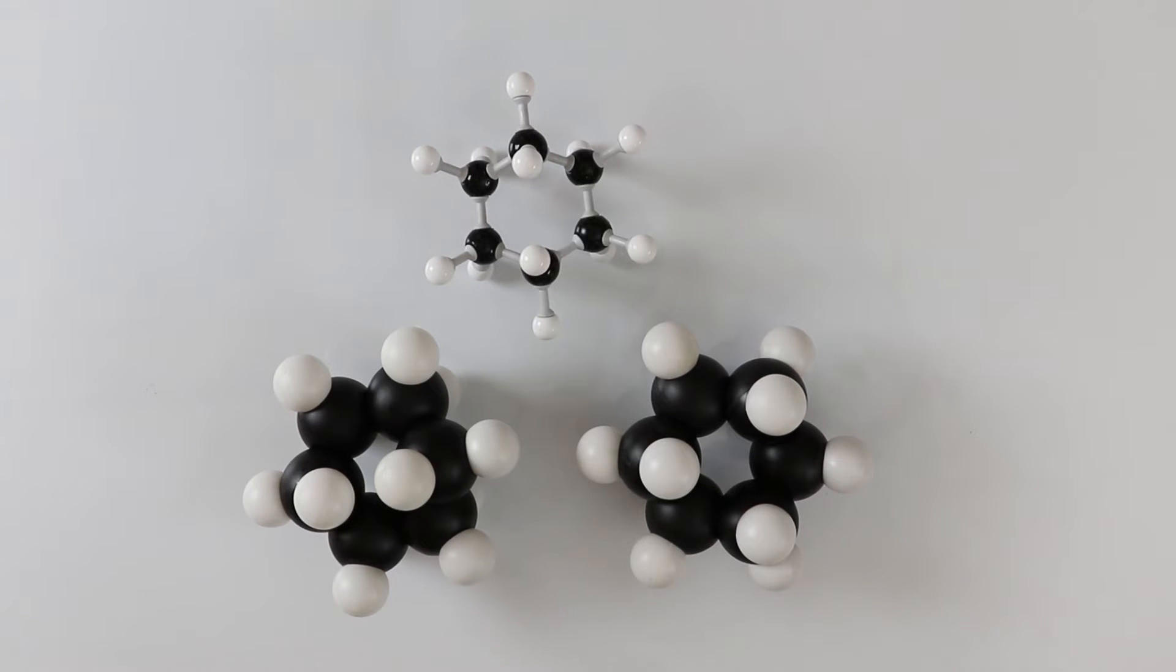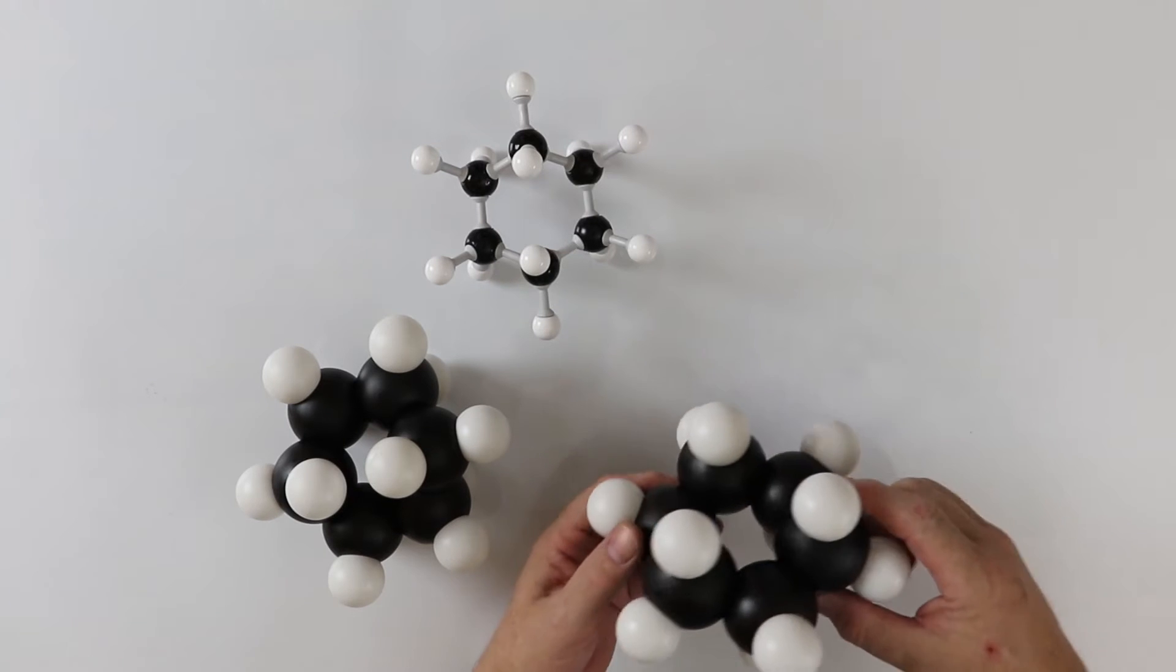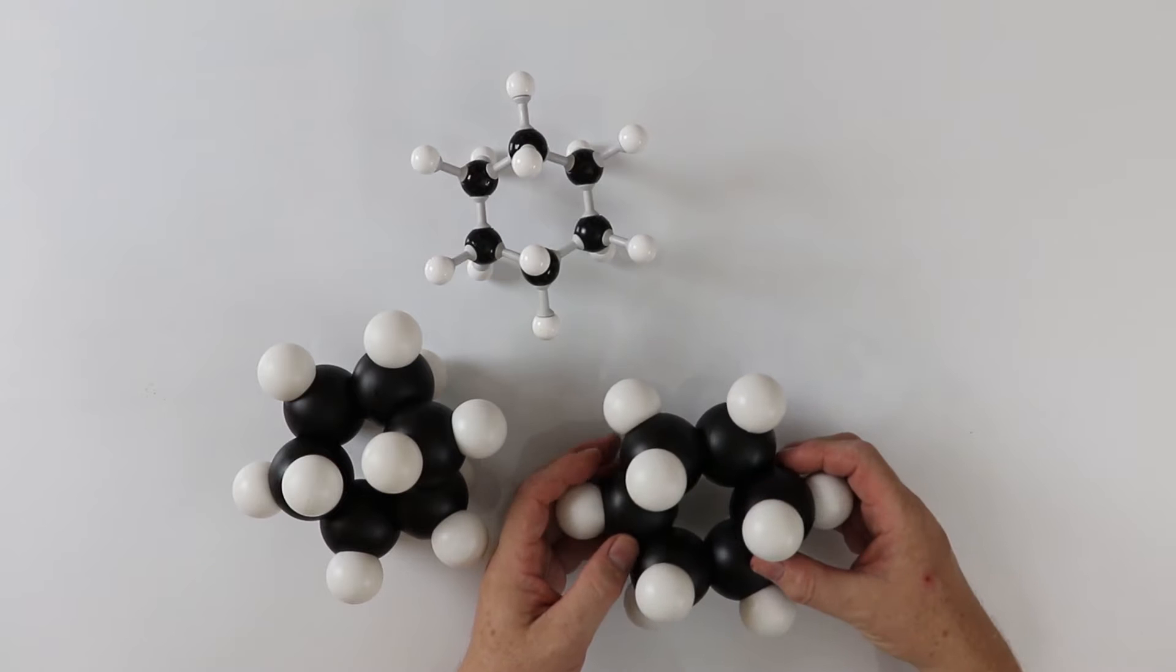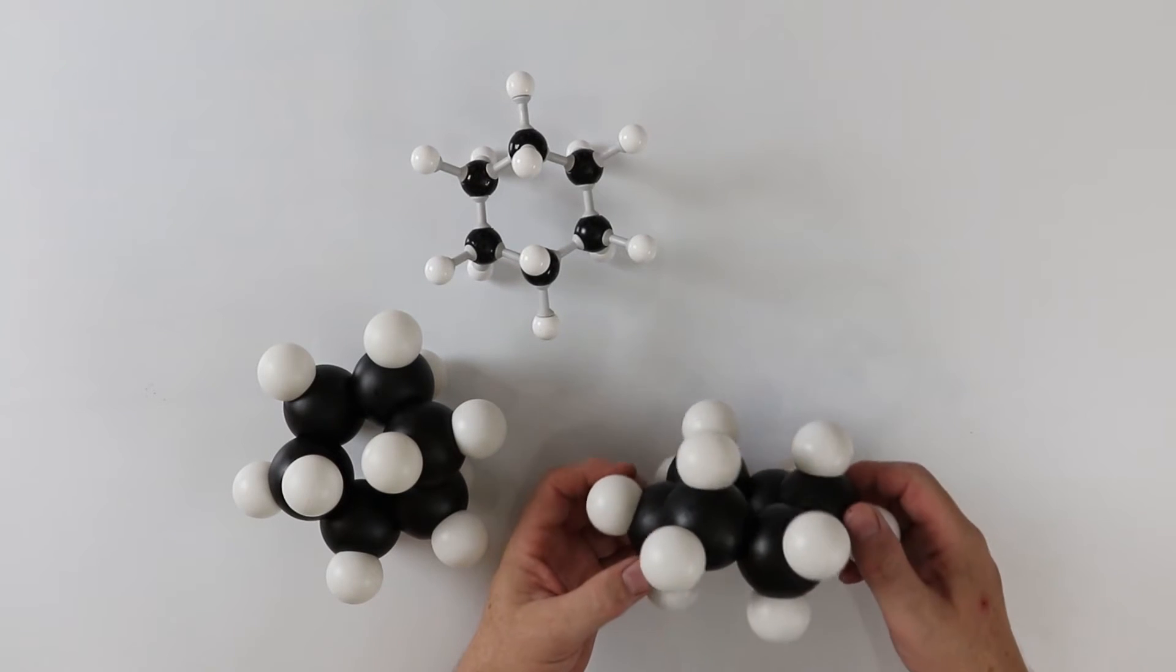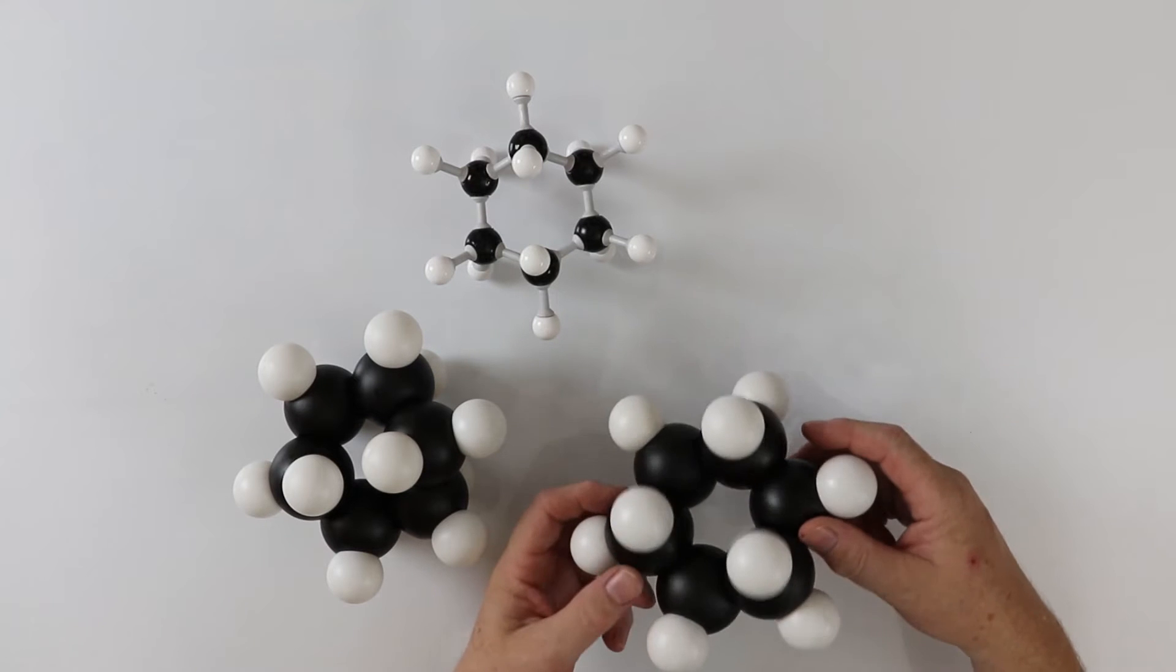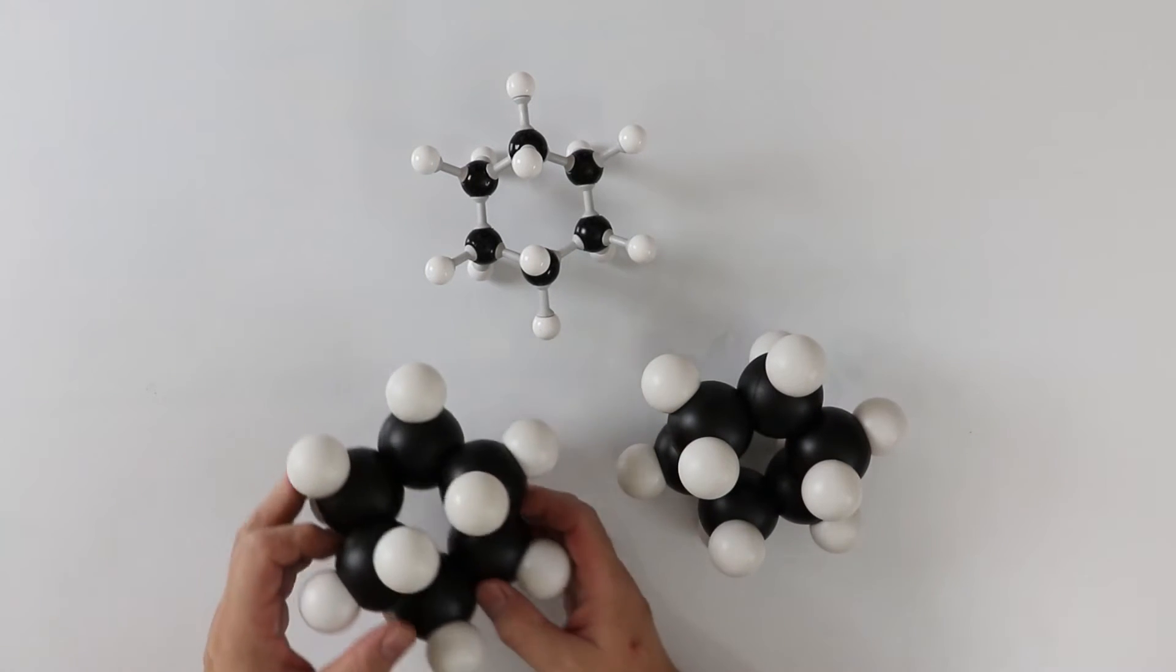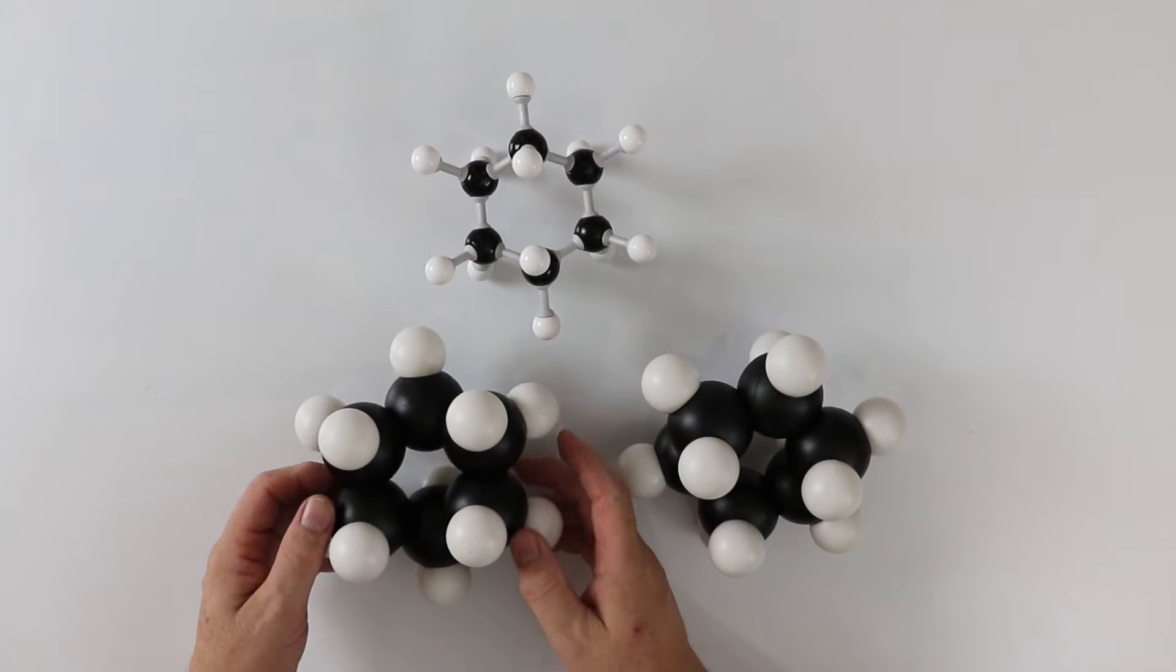These E or Z isomers, in their old names, are known as the chair and the boat form. In this one we can see the chair form, and here we can see the boat form.